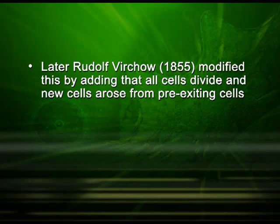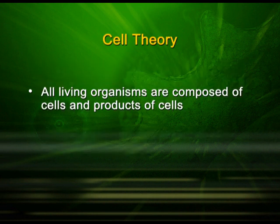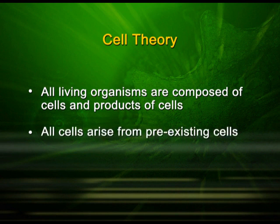Later, Rudolf Virchow in 1855 modified this by adding that all cells divide and new cells arose from pre-existing cells. Thus, the cell theory as understood today has two tenets: first, all living organisms are composed of cells and products of cells; second, all cells arise from pre-existing cells.